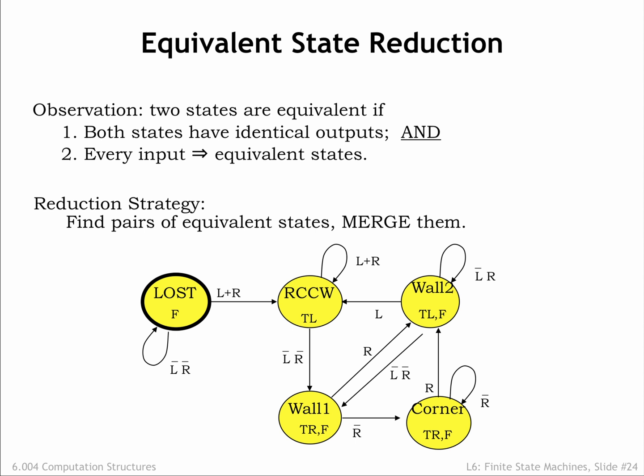Let's try this on our ANT FSM. First, we need to find a pair of states that have the same outputs. As it turns out, there's only one such pair: wall 1 and corner, both of which assert the turn right and forward outputs.